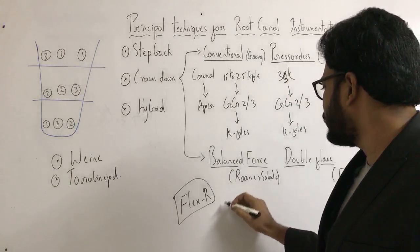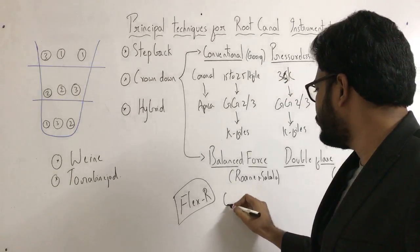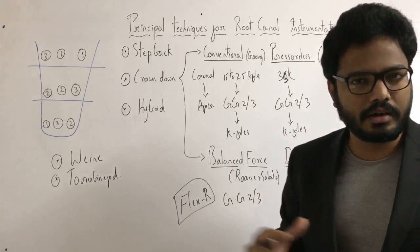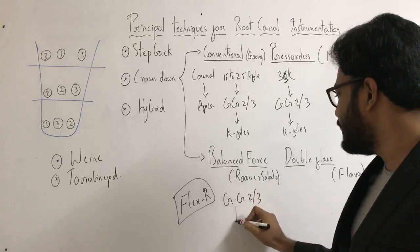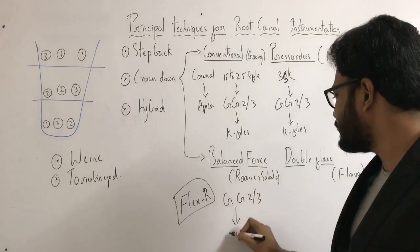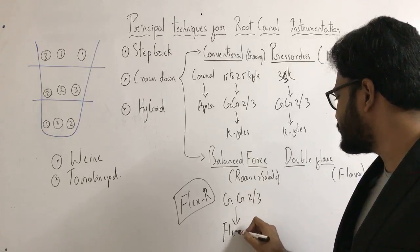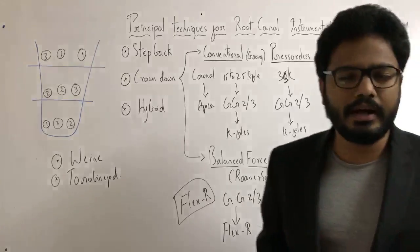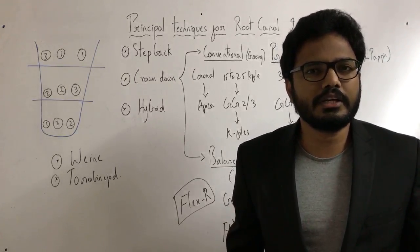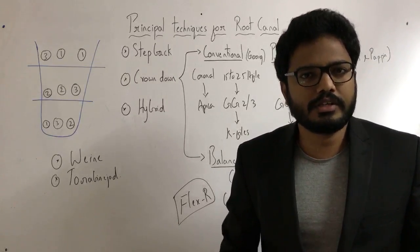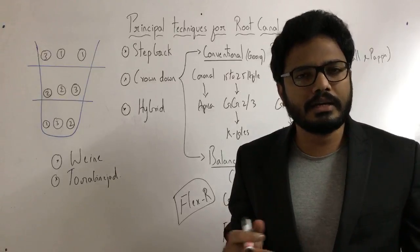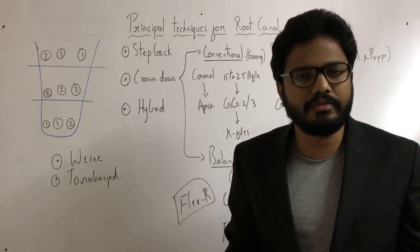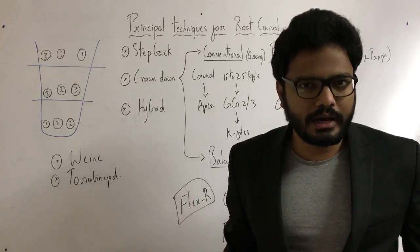The balanced force technique was proposed by Roane and Savala, using a new file design — the Flexa file. We use Gates-Glidden drills size 2 or 3 to clean the coronal curve of the canal. Then within the patent canal, we use these Flexa files. The Flexa file is a K-file with a modified non-cutting tip, so the file remains centered inside the canal and there won't be any transportation or ledging of the canal.